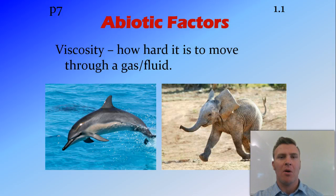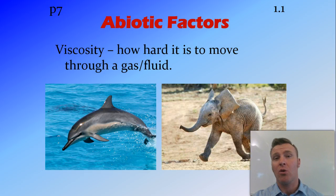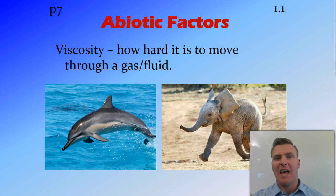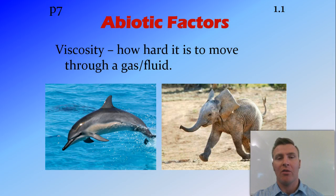The first abiotic factor we're looking at is viscosity — how hard it is to move through a gas or a liquid. In water, it's quite hard to move through, which is why most animals that live in water have a streamlined body. On land, air is much easier to move through, so it's not necessary for terrestrial animals to have that streamlined appearance.